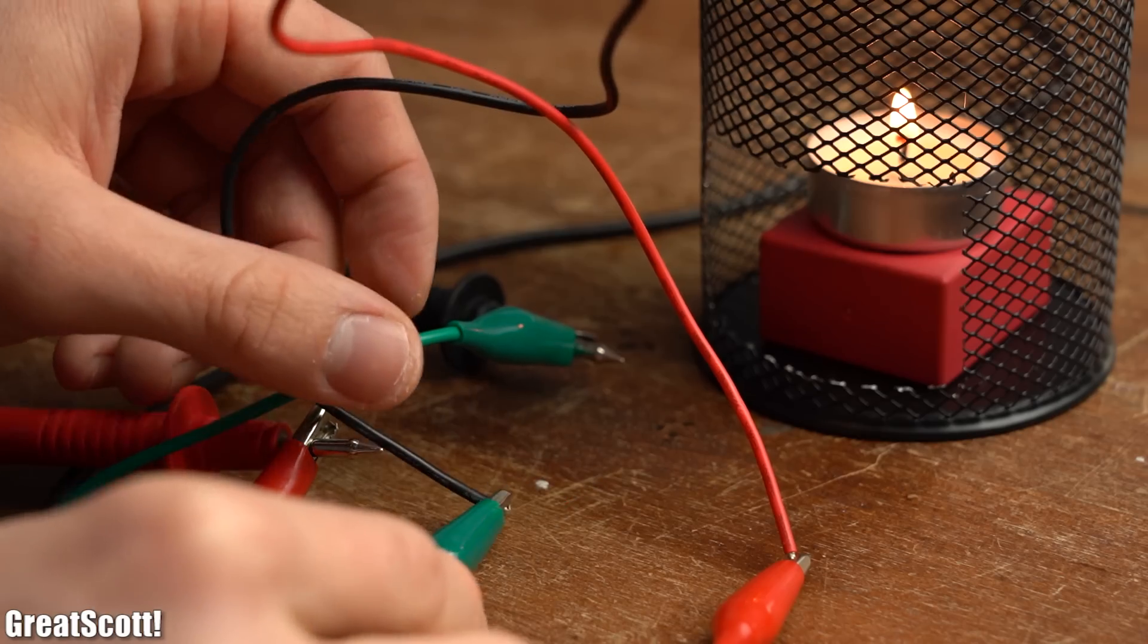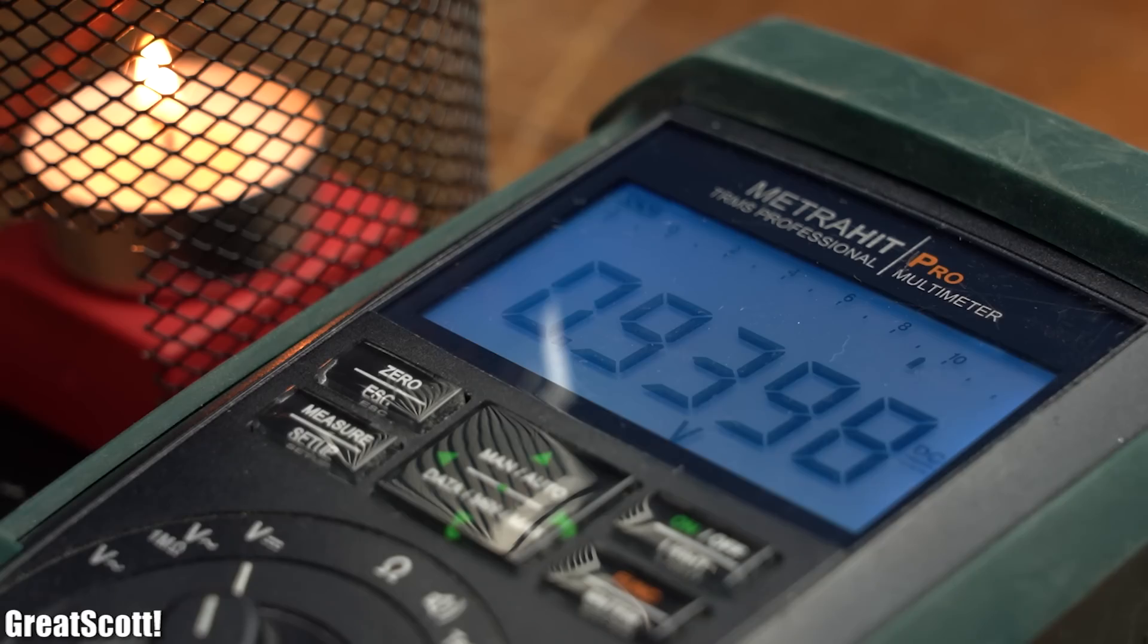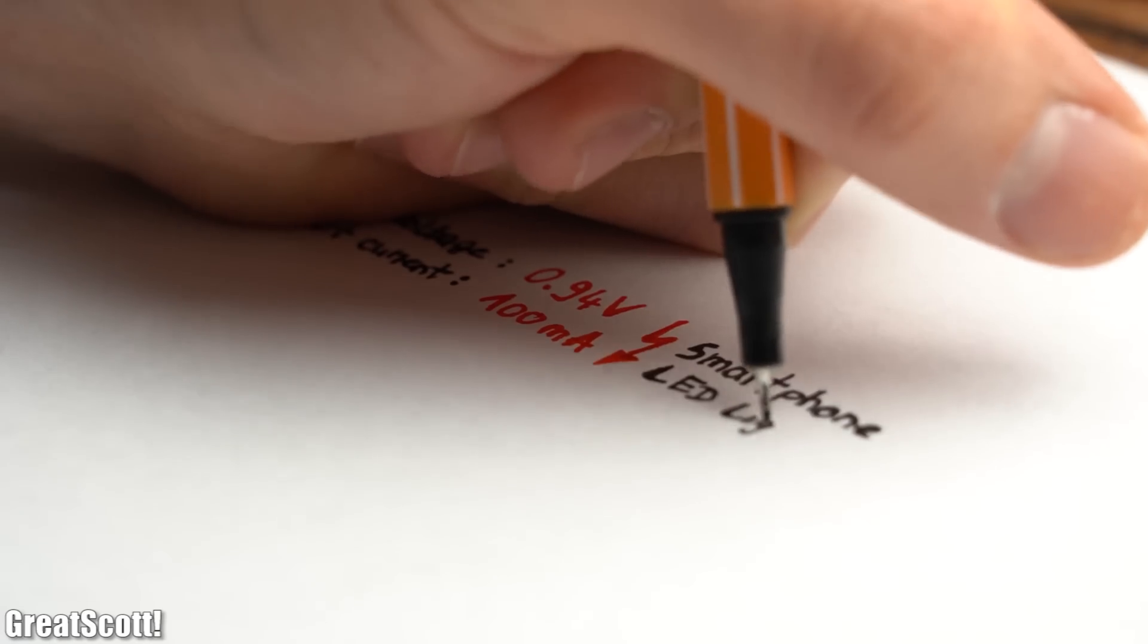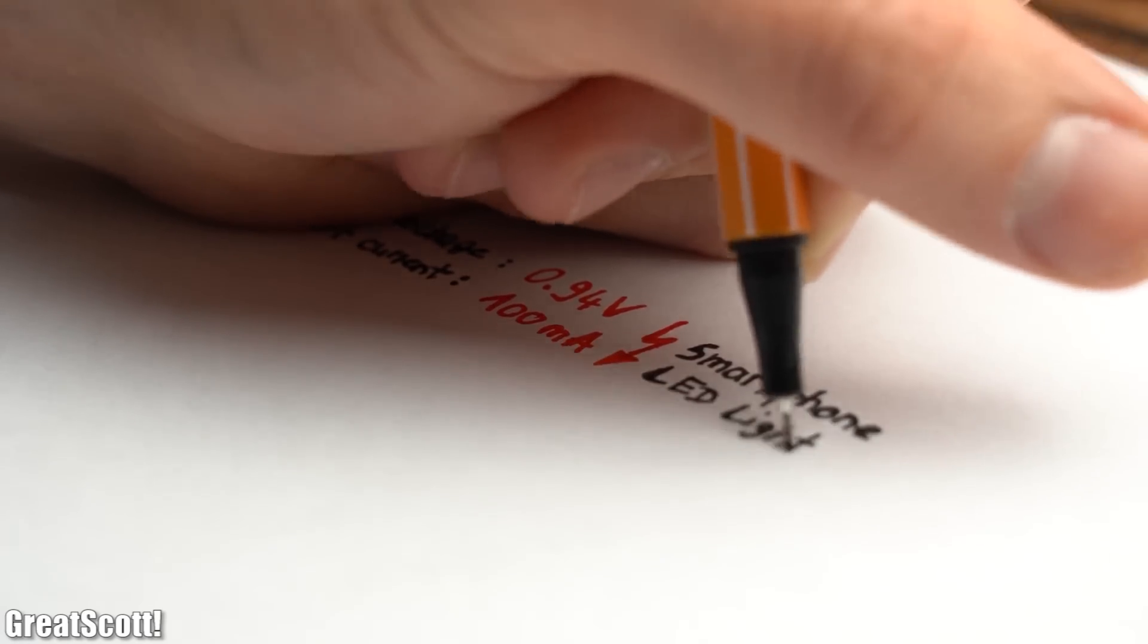By using my multimeter I was able to measure a maximum output voltage of 0.94V and a maximum short circuit current of 100mA. Those values are certainly not enough though to charge a smartphone or even light up a small LED.